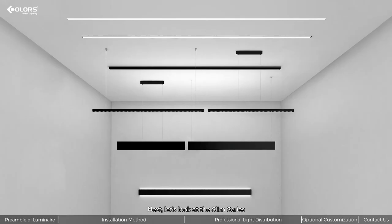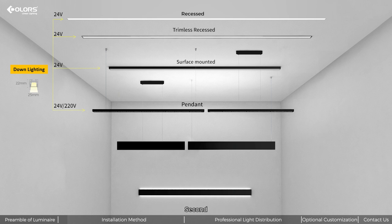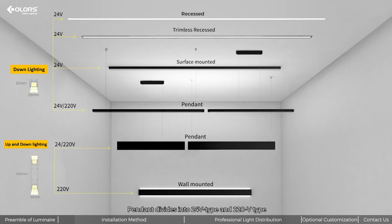Next, let's look at the Slim series. First, luminaire of downward lighting in dimension of 22 x 25mm is truly slim. Its installation methods include recessed, shambler recessed, surface-mounted, and pendant. Second, luminaire of upward and downward lighting in dimension of 25 x 100mm. Installation methods include pendant and wall-mounting, pendant dividing into 24-volt type and 220-volt type. Let's dive into them.